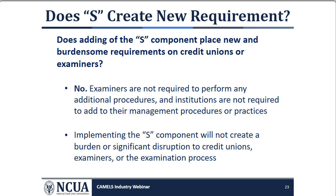Implementing the S component will not create a burden or significant disruption to credit unions, examiners, or the exam process. However, credit unions greater than 50 million in total assets must continue to comply with 741.3(b)(5), which requires all federally insured credit unions to adopt a written interest rate risk policy and implement an effective interest rate risk program.